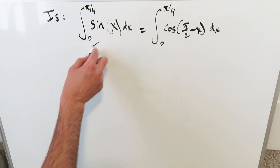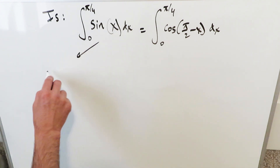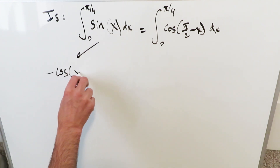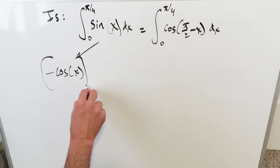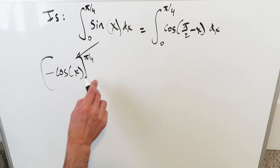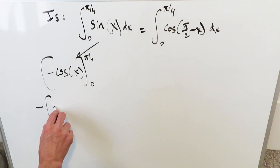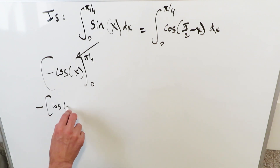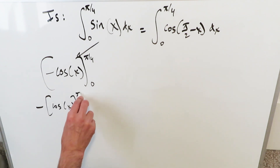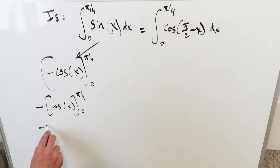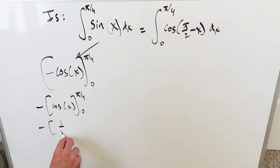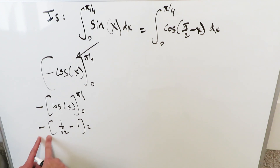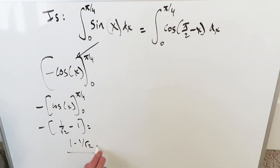The antiderivative of sine(x) is −cosine(x), evaluated from zero to π/4. Push the minus outside and evaluate cosine(x) from π/4 to zero. Cosine(π/4) is 1/√2 and cosine(0) is 1. Opening everything with the minus, you get 1 − 1/√2, and that represents the answer to this definite integral.